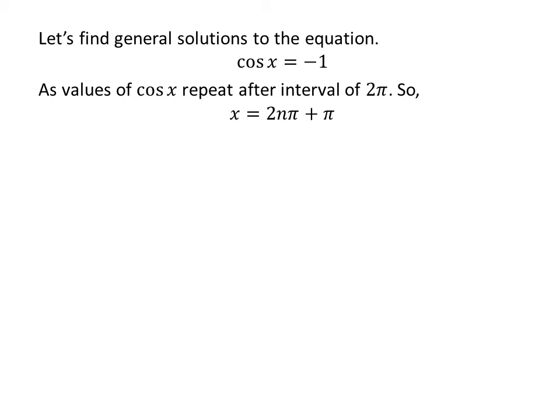Let us find the general solutions for the equation cosine of x is equal to minus 1. As we know, the values of cosine of x repeat after the interval of 2π.